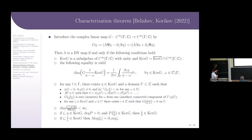Property number four is the following: if we have two holomorphic functions zeta and eta, then zeta over eta in general is not a holomorphic function — it has poles. But if a polynomial of zeta over eta is also a holomorphic function, then it satisfies the required condition.